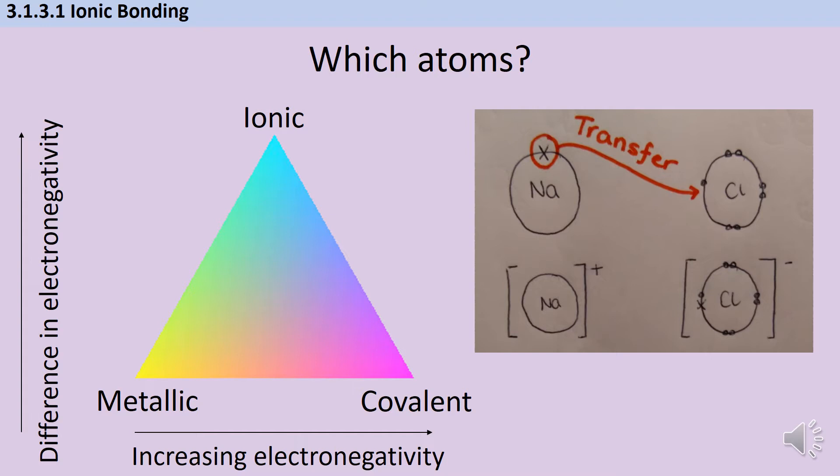At A-level we can start to have more subtlety. Ionic bonds form primarily between elements with a big difference in electronegativity. If one element is very good at pulling electrons towards itself and one is less good, you'll have an ionic bond, which forms as a result of electron transfer.